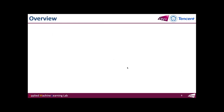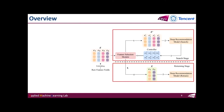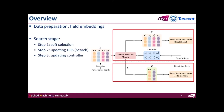Here is the framework and an overview of AutoField. It consists of two stages: the search stage and the retraining stage. We first get the embeddings of all feature fields and initialize the controller. Then we feed these embeddings to the selection module, which provides feature selection results according to the controller parameters. In the search stage, we update the controller and the deep recommendation model parameters. In the retraining stage, we select the optimal feature subset and retrain a deep recommendation model.